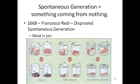In 1668, Francisco Redi disproved spontaneous generation. What did he do? He put meat in jars. First, he had meat in open jars, and there were flies. Secondly, he put meat in sealed jars — there were no flies. Thirdly, he put jars with cheesecloth covers over them — remember that cheesecloth from our labs? He put meat in jars and then put cheesecloth. No flies inside by the meat. Therefore, the flies must come from somewhere else, not just from the meat.